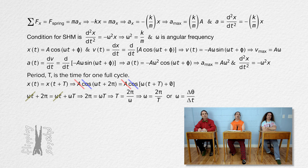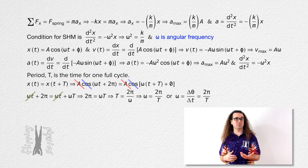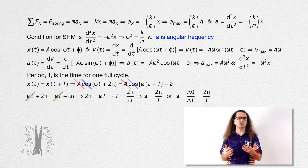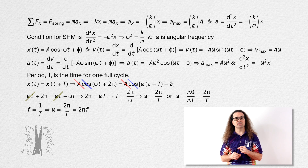We could also use angular velocity equals angular displacement over change in time — for one full cycle, that equals 2 pi radians over the period. However, the derivation just shown does not use the equation for angular velocity, which makes it more clear that omega in these simple harmonic motion equations is angular frequency. Frequency equals the inverse of the period, therefore angular frequency equals 2 pi times frequency, which illustrates that angular frequency and frequency are not the same.